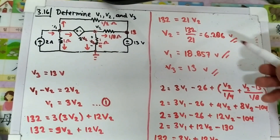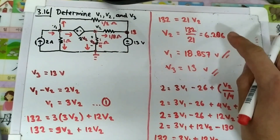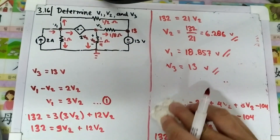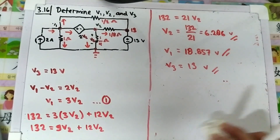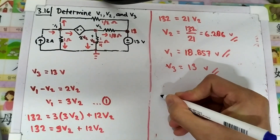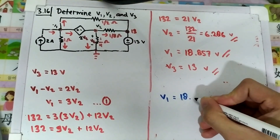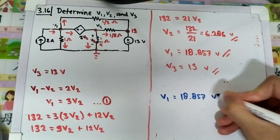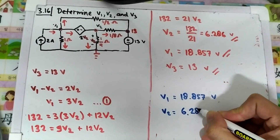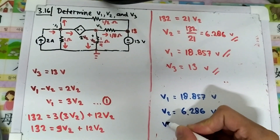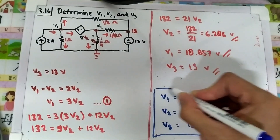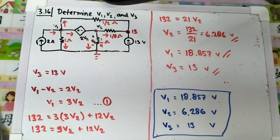So our final answers are: V1 equals 18.857 volts, V2 equals 6.286 volts, and V3 equals 13 volts. Thank you for watching.